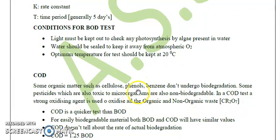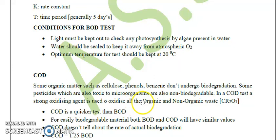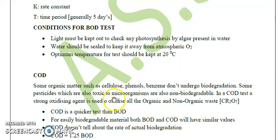The order of toughness to degradation is as follows: chitin is the most tough to degrade, followed by lignin, followed by cellulose, followed by hemicellulose, followed by starch. This order has been asked many times in competitive exams. Some species like pesticides, being toxic to microorganisms, are also non-biodegradable in water.